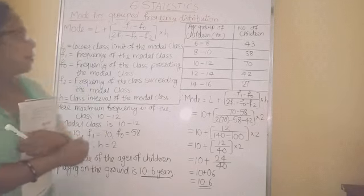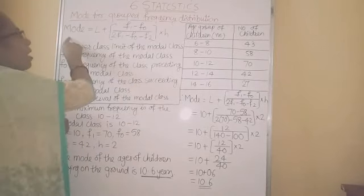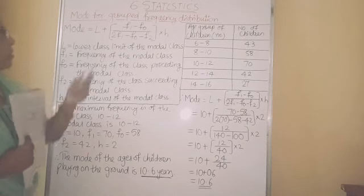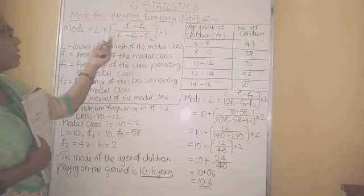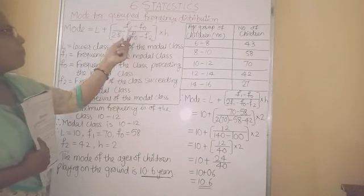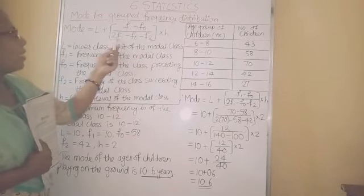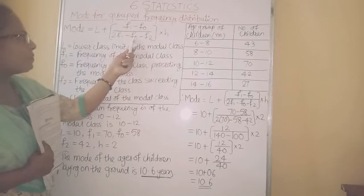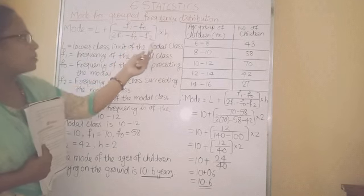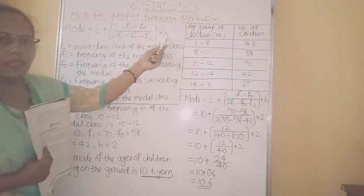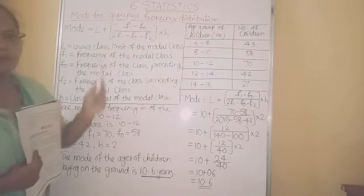What is the mode? For grouped frequency distribution, we have a formula to calculate mode. The mode is equal to L plus bracket F1 minus F0 upon 2F1 minus F0 minus F2, bracket close, into H. Now let us see what is the meaning of these letters.